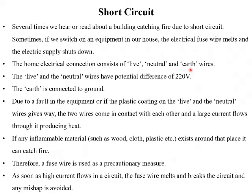TV, refrigerators, and microwaves make use of three-pin plug wires. The live and neutral wires have a potential difference of 220 volts. In India, this potential difference between the live and neutral wire can be between 220 to 250 volts. The live wire is the positively charged wire at high electric potential — 220 volts — whereas the neutral wire is at low electric potential, that is zero potential. So one is at 220V and the other is at 0V, and this potential difference is constantly maintained, which causes the flow of electric current.